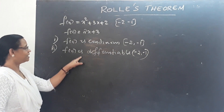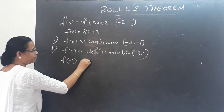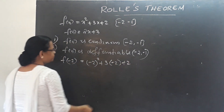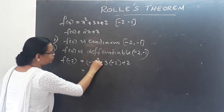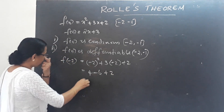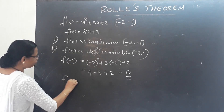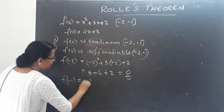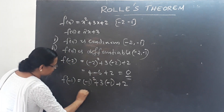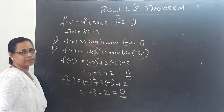We now check the third condition. Computing f(−2): (−2)² + 3(−2) + 2 = 4 − 6 + 2 = 0. Computing f(−1): (−1)² + 3(−1) + 2 = 1 − 3 + 2 = 0. Since f(−2) = f(−1) = 0, the third condition is satisfied.